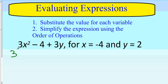3 times x squared. x is negative 4, so 3 times negative 4 squared. Minus 4 plus 3 times y, and y is 2. So 3 times 2.